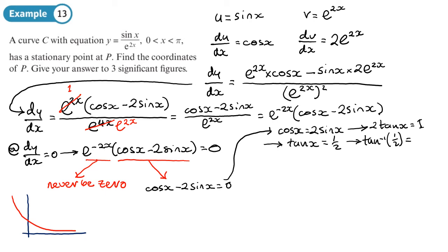We'll do the tan inverse of a half to get the principal solution. Remember we are in radians - have a look at the range here - and in fact, whenever we do any trigonometry when we're doing differentiation, it's going to be in radians. So tan inverse of a half in radians, I get 0.4636...